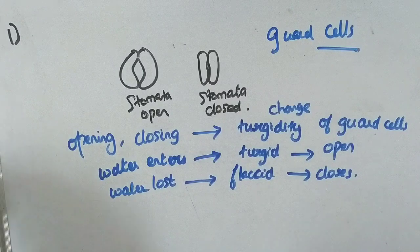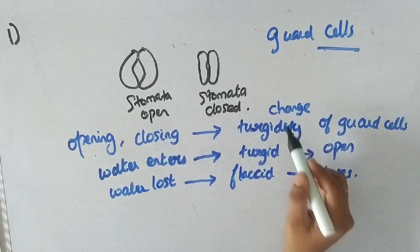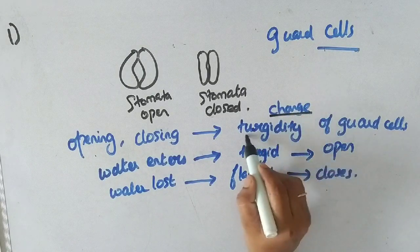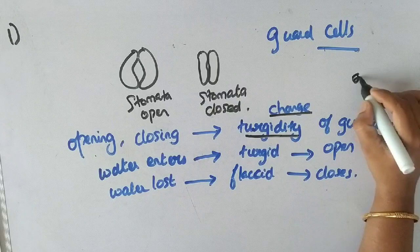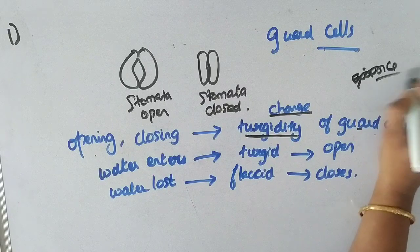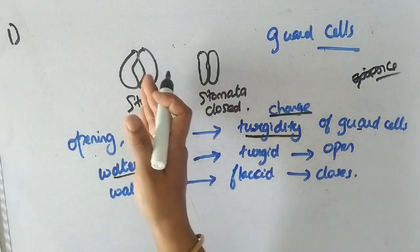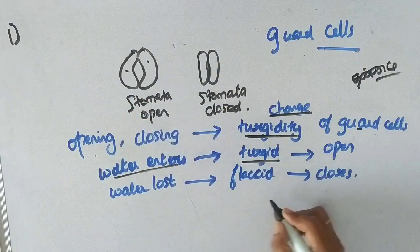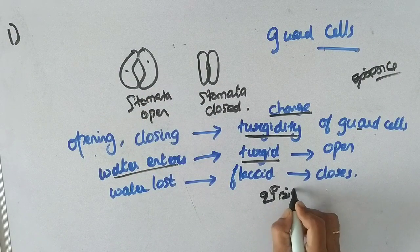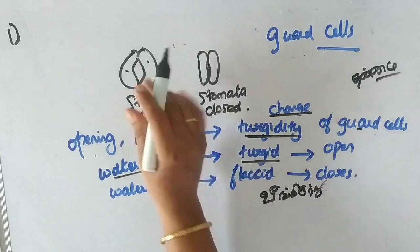What is turgidity? Turgidity refers to the swelling or turgor pressure of the guard cells. When water enters the guard cells, we have turgidity of the guard cells.